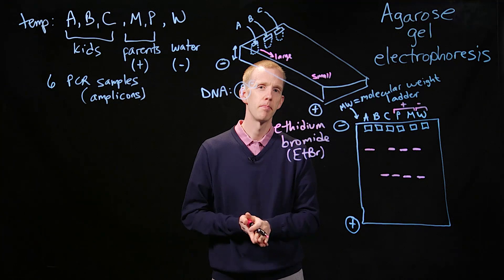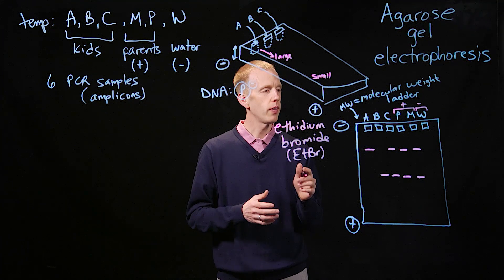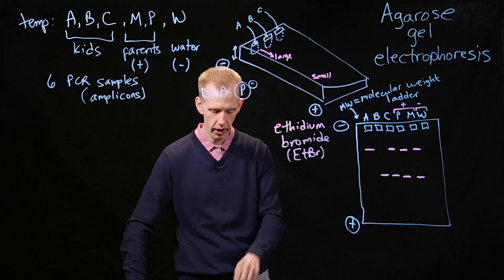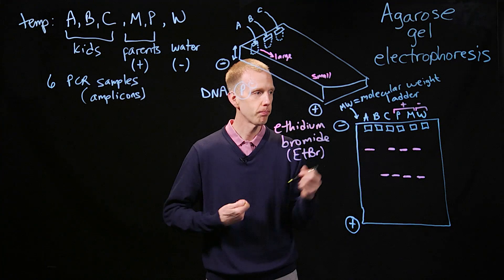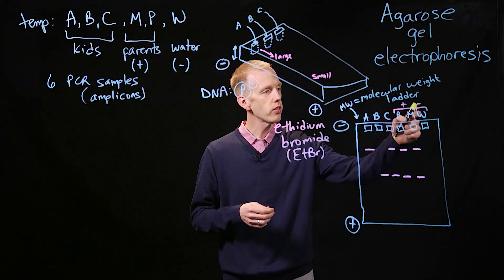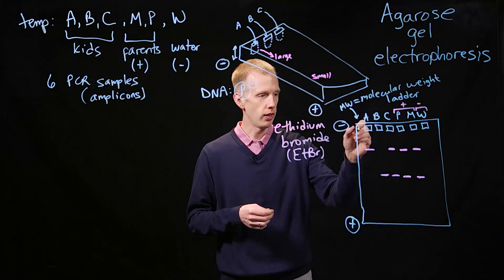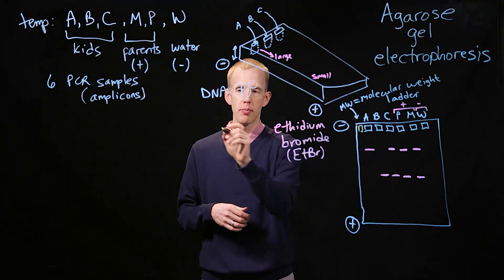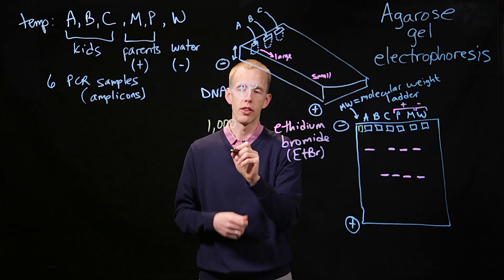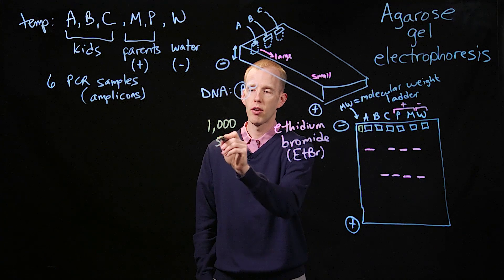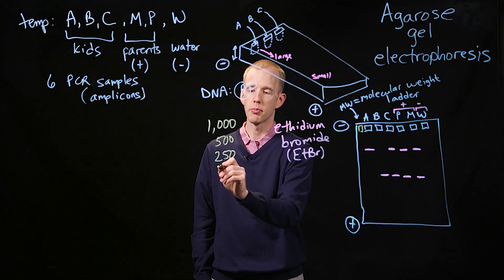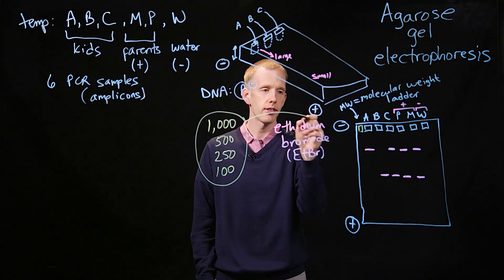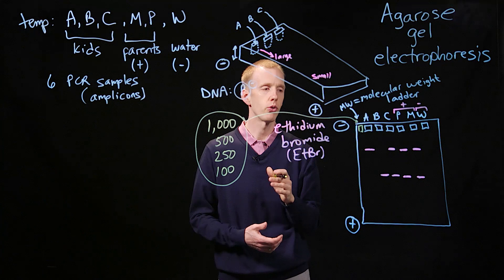To answer that question, one of the things that we're going to have to do is to know what are the sizes in terms of base pairs of these bands, and that's where the molecular weight ladder comes in handy. So what goes in the molecular weight ladder lane is a mixture of DNA samples that we know the sizes of. So that might be a tube that contains fragments of DNA that are 1,000 base pairs, 500 base pairs, 250 base pairs, and 100 base pairs, for example.